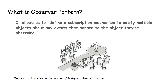So what is the observer pattern? It basically allows us to define a subscription mechanism to notify multiple objects about any events that happen to the object they're observing. We have a bunch of observers or audience who are trying to observe an object — the publisher — which publishes data and notifies all the observers who subscribe to it. So one object publishes and other objects subscribe to this data.